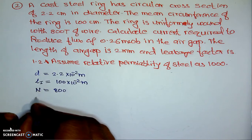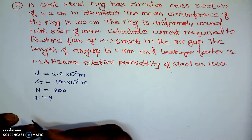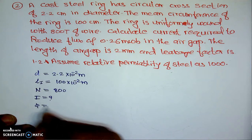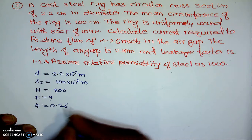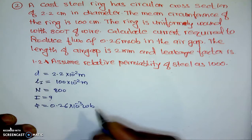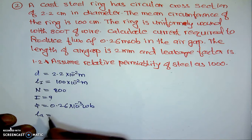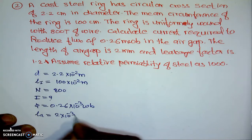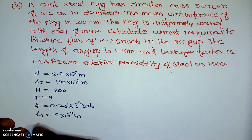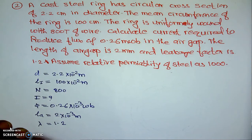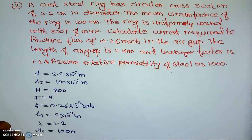We are required to calculate the current needed to produce a flux of 0.26 milliweber — that is 0.26 × 10⁻³ weber — in the air gap. The length of the air gap is given as 2 mm, that is 2 × 10⁻³ meters. The leakage factor lambda is given as 1.2, and the relative permeability of the steel, mu_r, is given as 1000.